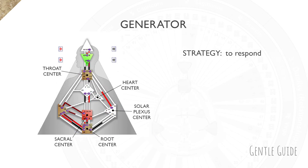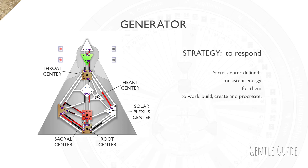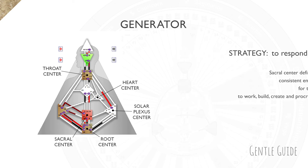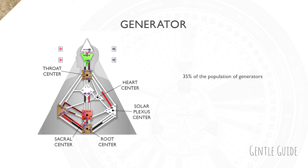Let's cover Generators next — strategy: to respond. This is an example of a Generator chart. Every Generator will have a sacral center defined. This center is the one that provides consistent energy for them to work, build, create, and procreate. There is approximately 35% of the population who are Generators.